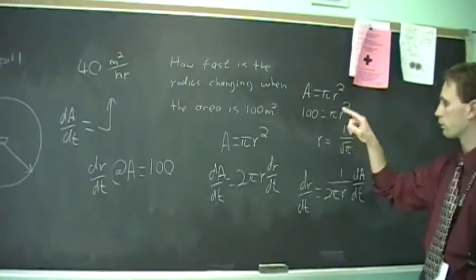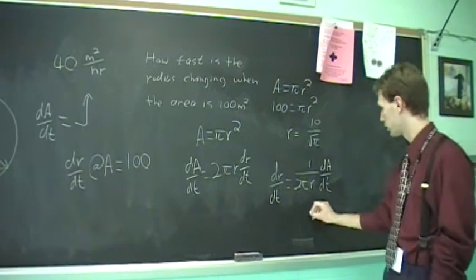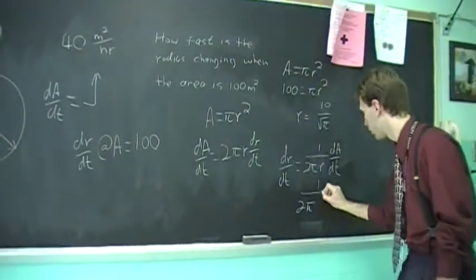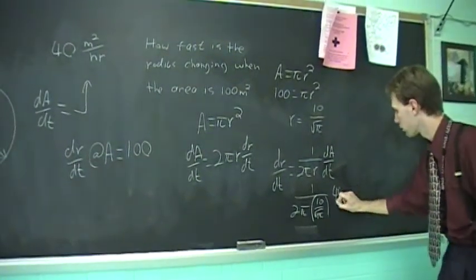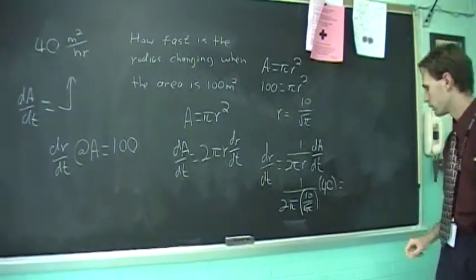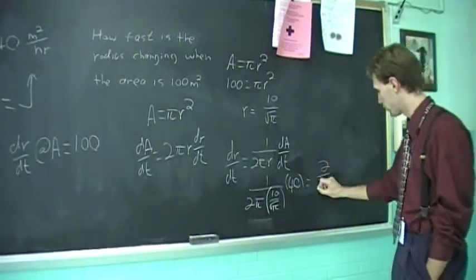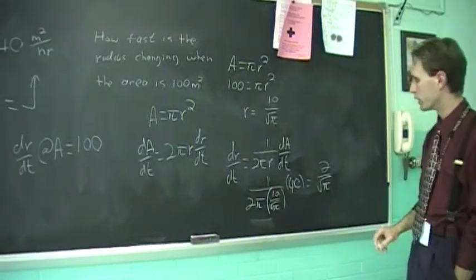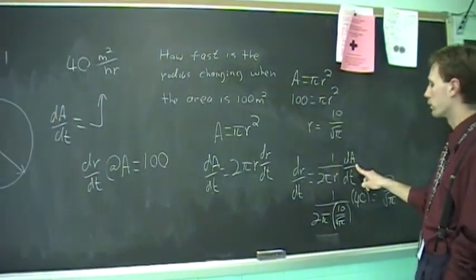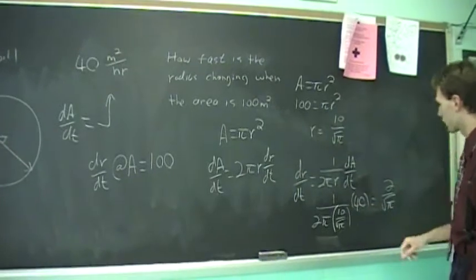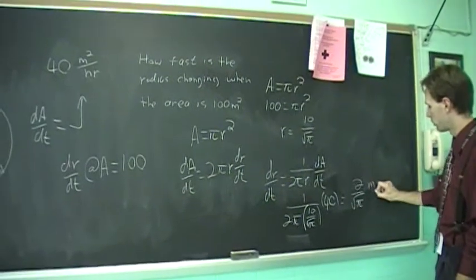But you just substitute everything in, make r equal to 10 over √π, make dA/dt equal to 40. And you get 1 over 2π times 10 over √π times 40, which turns out to be 2 over √π once you simplify. And the units will be meters per hour, because the original A was measured in square meters, so r is measured in meters. That's how you know, you trace back to what the original units were. So this would be 2 over √π meters per hour.